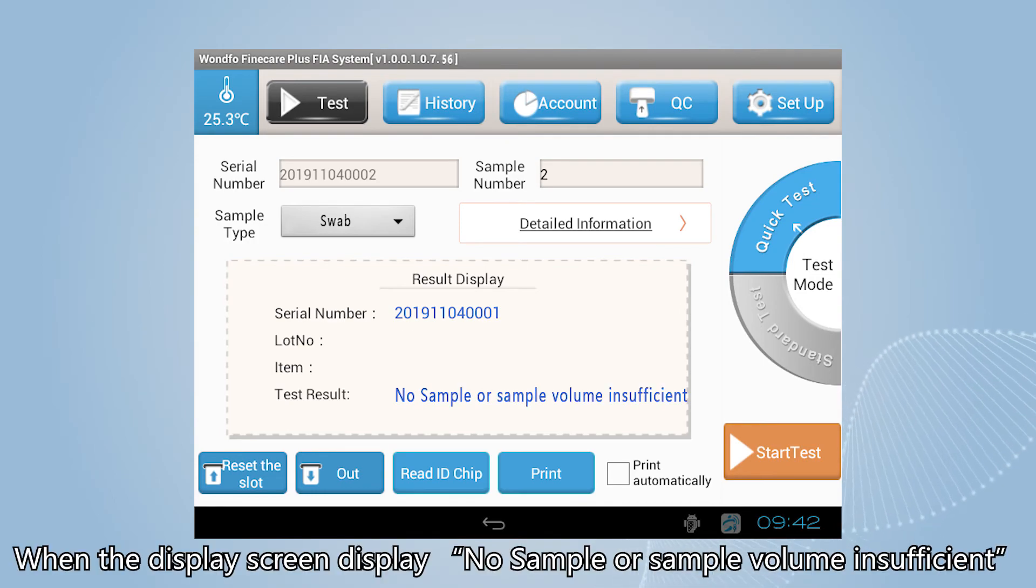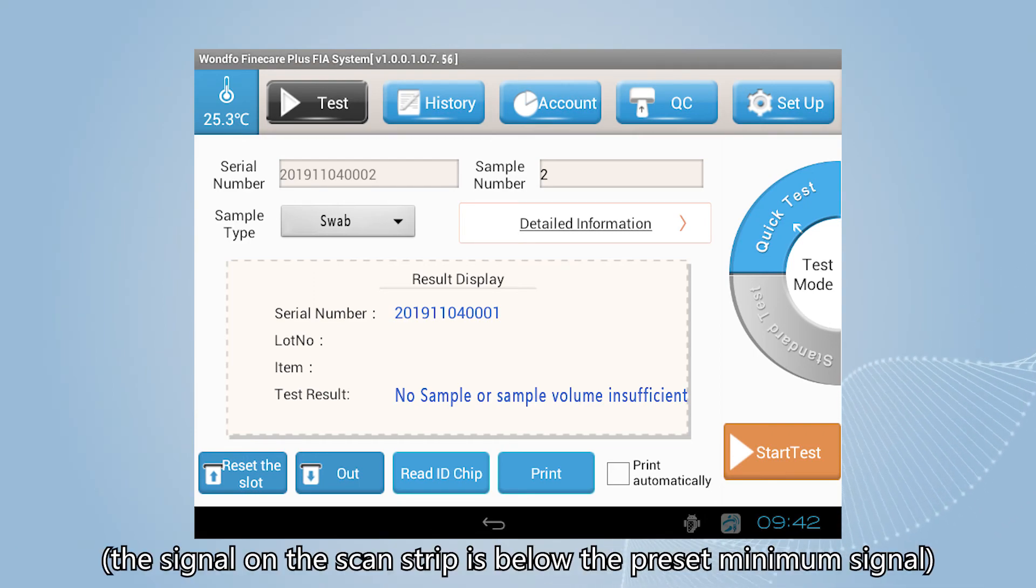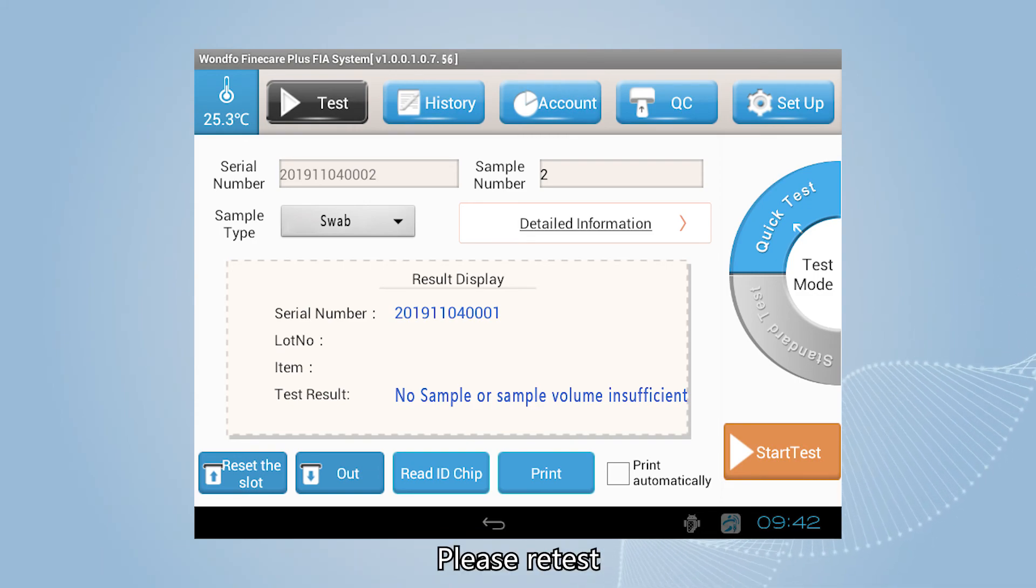When the display screen shows no sample or sample volume insufficient, it indicates an invalid test. The signal on the scan strip is below the preset minimum signal. Please retest.